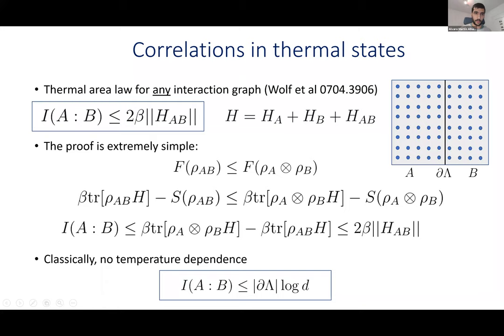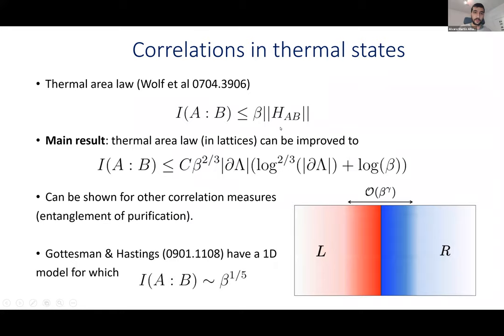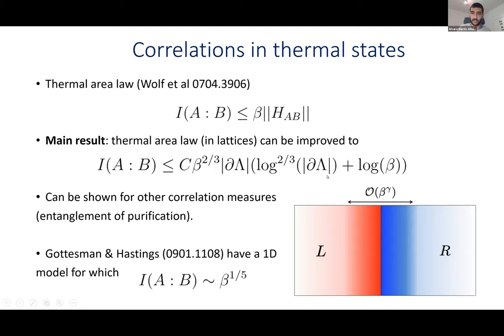Now I can start introducing our results. The previous area law had a factor of two that we can actually remove. How do we improve this result? Our first main result is the following: in lattices — and I should note the previous area law actually holds for any interaction graph, not just lattices, but for us we need to go to lattices — the mutual information can be upper bounded by something that depends like β^(2/3), times the area of the boundary between A and B, with some logarithmic factors. In one dimension this is a constant. This is an improvement from the previous β scaling when β is large.